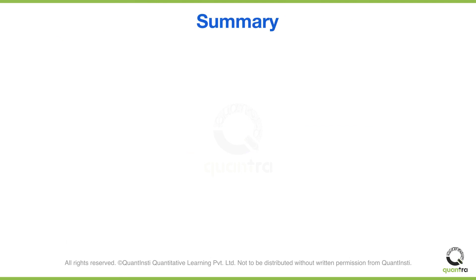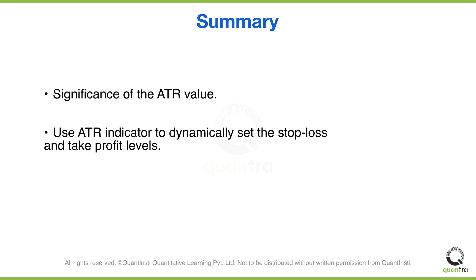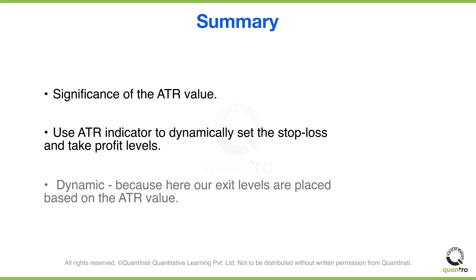Now let us quickly summarize what we learned in this video. Firstly, we understood that the ATR value gives us the approximate range in which the prices are expected to move for the next candle. And finally, we learned how to use the ATR indicator to dynamically set our stop loss and take profit levels. The approach is called dynamic because our exit levels are placed based on the constantly updating values of the ATR indicator. That was all for this video.